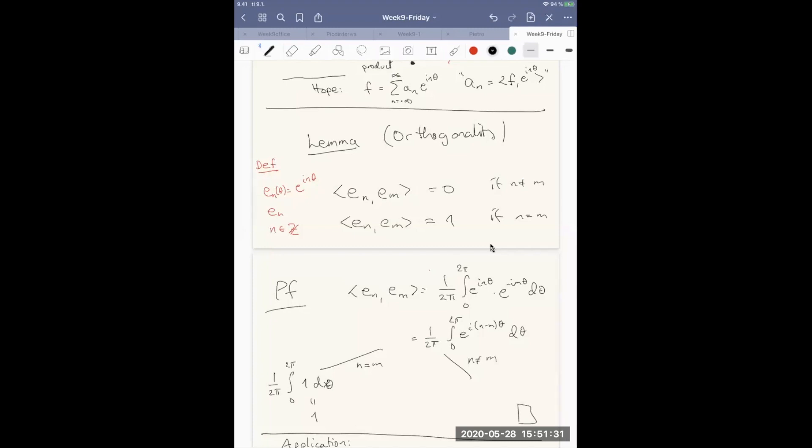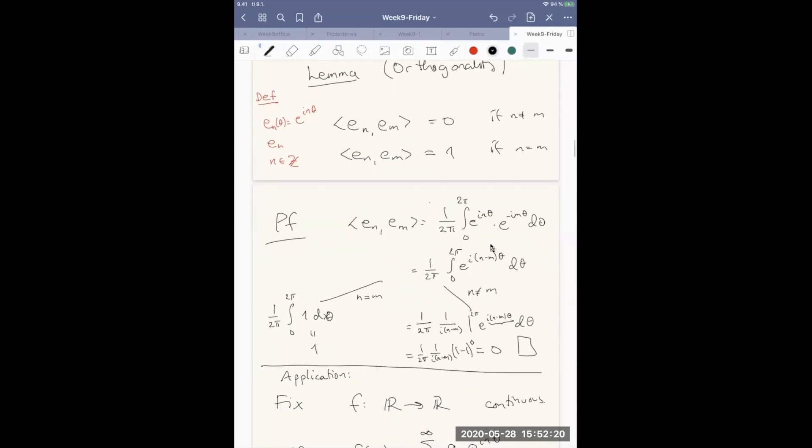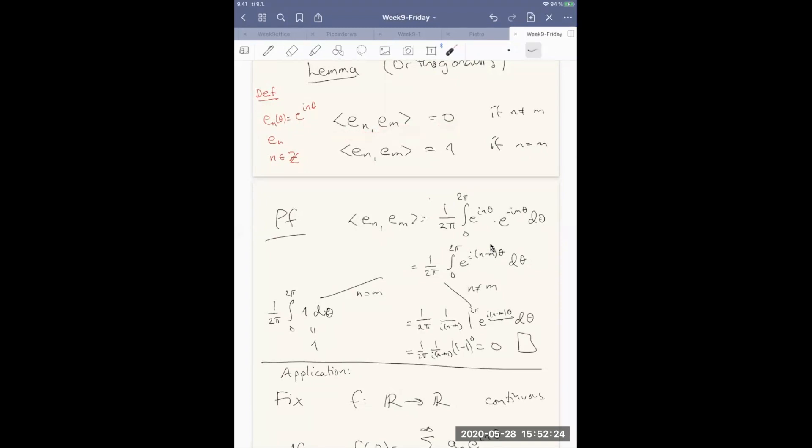But when n is not equal to m, we can integrate this in the usual way, imagining this is a real integral. So the integral function would be 1 over i n minus m, and the substitution would be from 0 to 2 pi e to the i n minus m theta d theta. The factor here comes, once we integrate, we have to divide by that factor. And in this case, this is 2 pi periodic. So the value at the top minus the value at the bottom will give you 0. So this is 1 over 2 pi, 1 over i n minus m, times 1 minus 1, which is 0. Because 1 minus 1 is equal to 0. So this indeed shows that when the indices are different, the inner product is 0. And when the indices are the same, the inner product is 1.